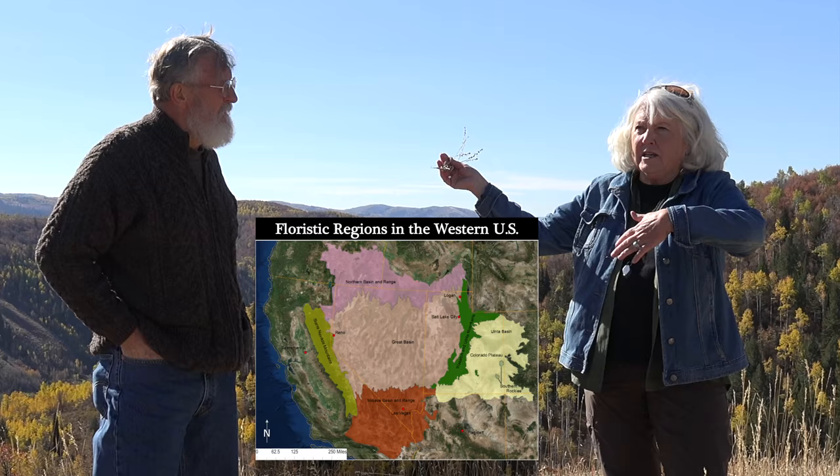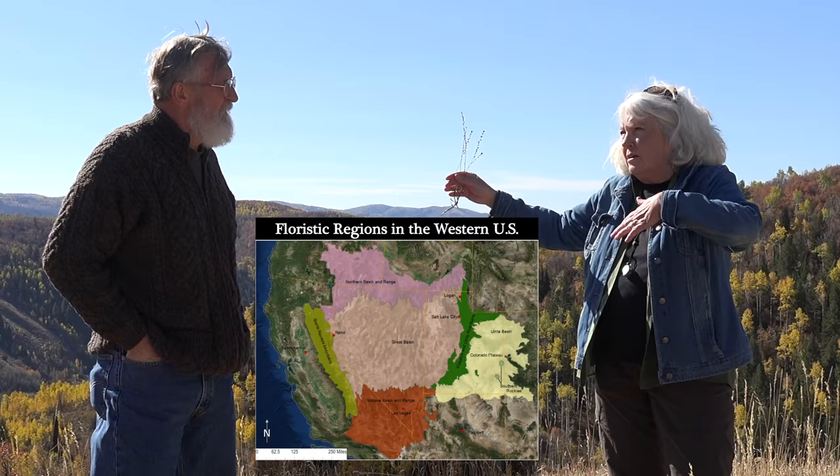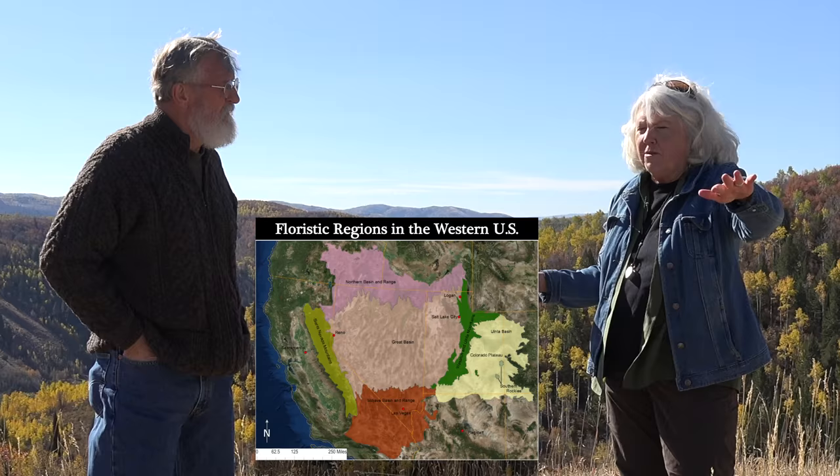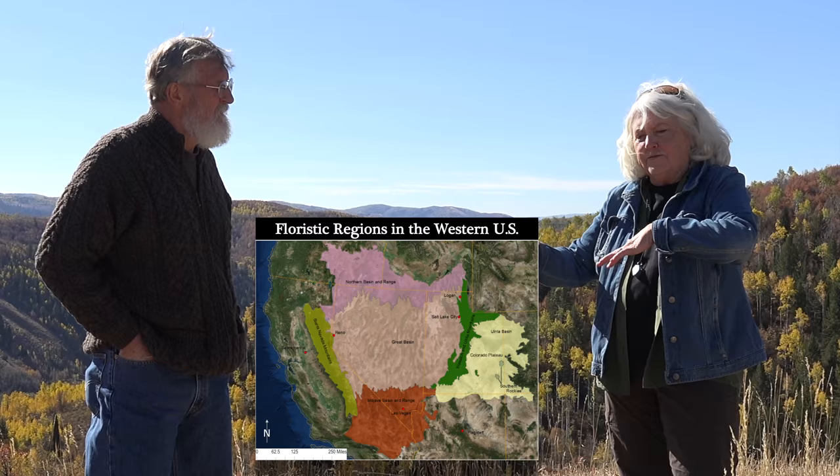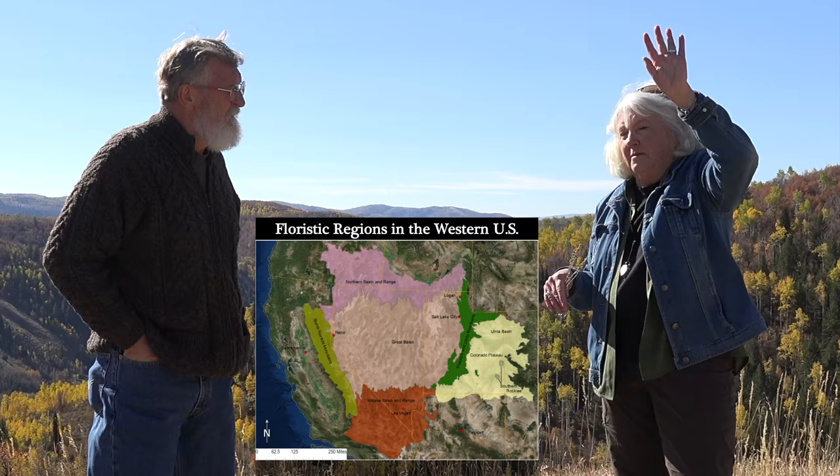The Intermountain region includes the Great Basin. We're on the edge of the Great Basin now — the hydrographic Great Basin that stretches from these Wasatch Mountains to the Sierra Nevada in California. It includes all of Nevada. But if you're dealing with the flora of Utah, you're also picking up the Colorado Plateaus, the southwestern part of the state with a little bit of the Mojave Desert, and the Uintah Basin. We're about 40 miles from Wyoming, and Idaho is just a few miles north of us.